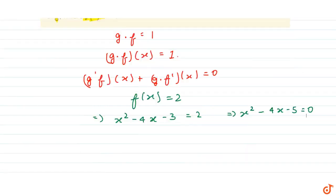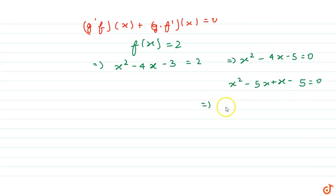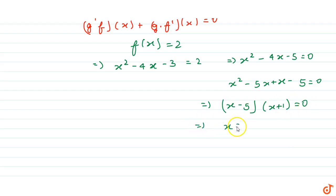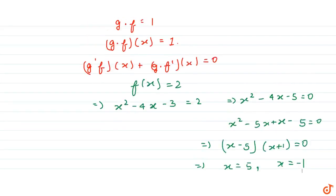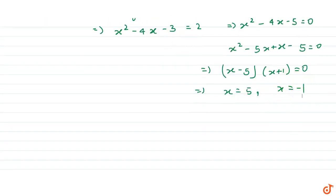Now we factor this: we get x squared minus 5x plus x minus 5 equals 0, so the factors are x minus 5 and x plus 1 equals 0. This gives x equals 5 and x equals minus 1. But since f of x is valid only when x is greater than 2, x equals minus 1 is rejected, so x equals 5.